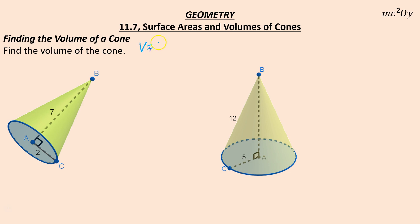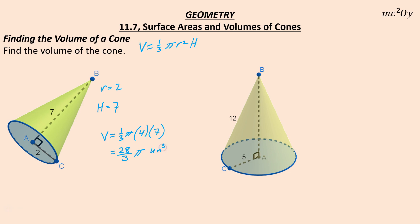Let's try some here. Volume equals one-third πr²h. I need to know the radius and the height. They tell me the height is 7 and the radius is 2. So volume equals one-third times π times 4 times 7, which gives 28 times one-third, or 28π/3. That's the exact volume — you can't reduce 28/3. Rounded to the nearest tenth, that would be 29.3 cubic units.